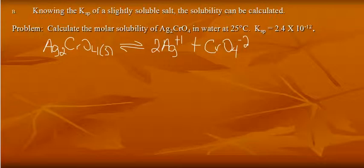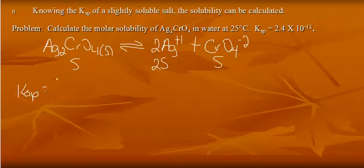We're going to let S be the solubility. So S is the solubility of the solid. The solubility of silver is actually going to be 2S, while the solubility of chromate is S. So Ksp is going to be equal to the concentration of silver ions squared, because of the coefficient, multiplied by chromate.